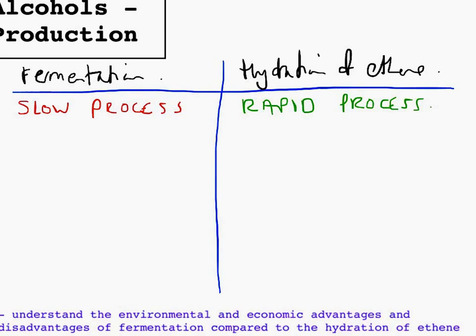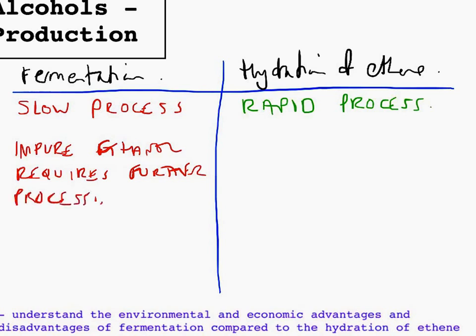Think about the quality of the product. Fermentation produces an impure ethanol, which requires further processing. So we need to get the ethanol out by fractional distillation. And hydration of ethene produces pure ethanol, or at least as pure as it can be.